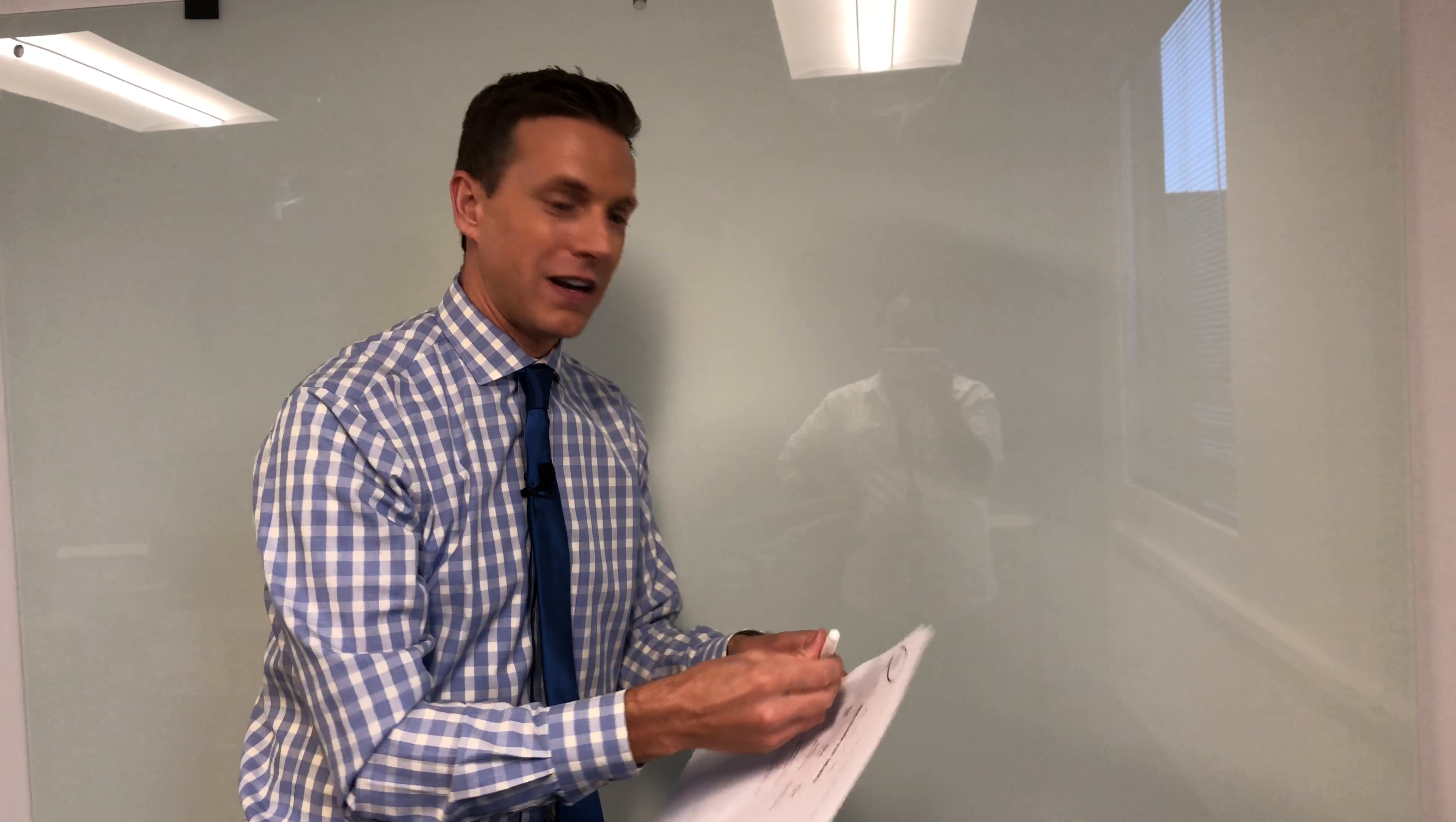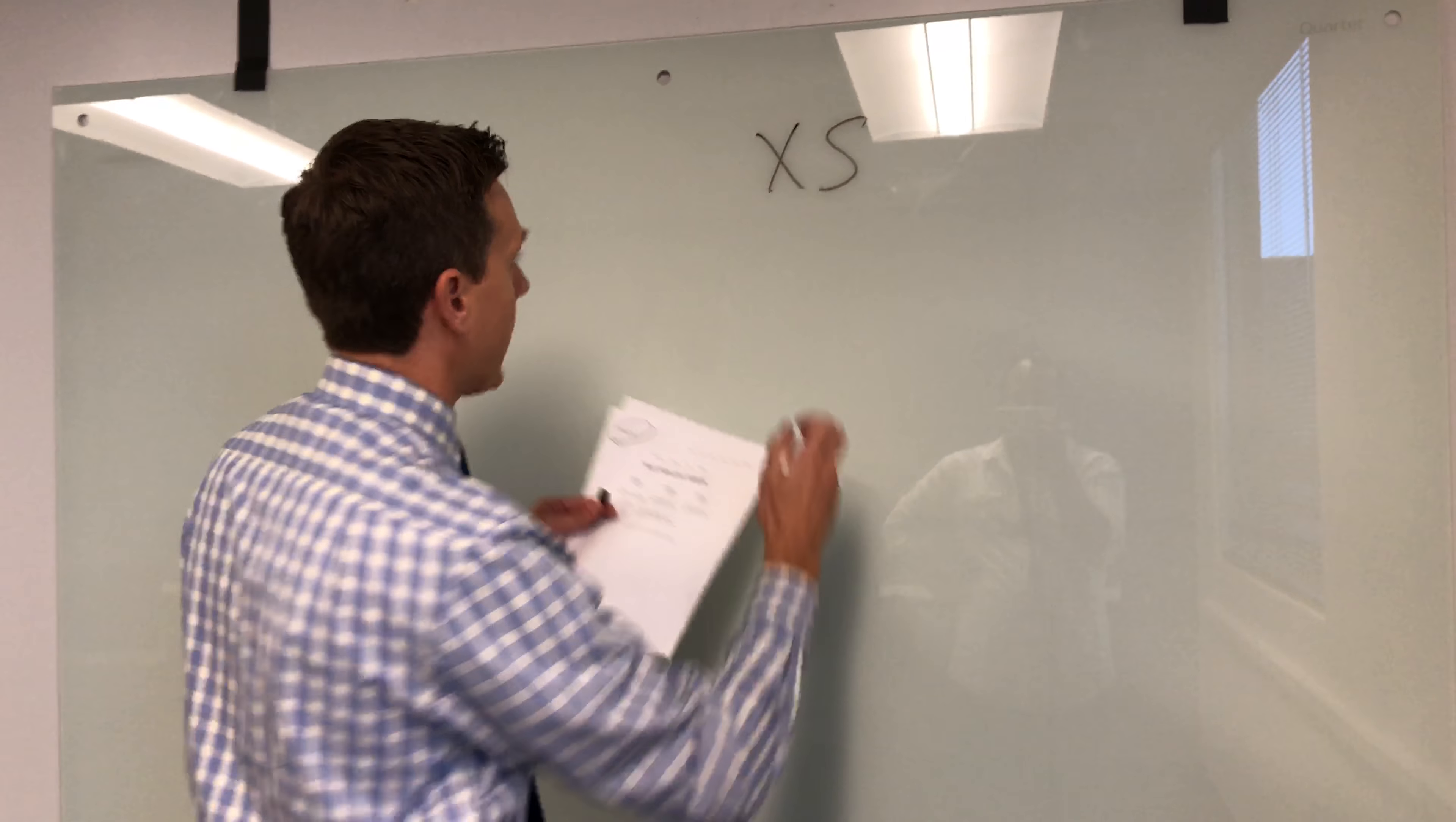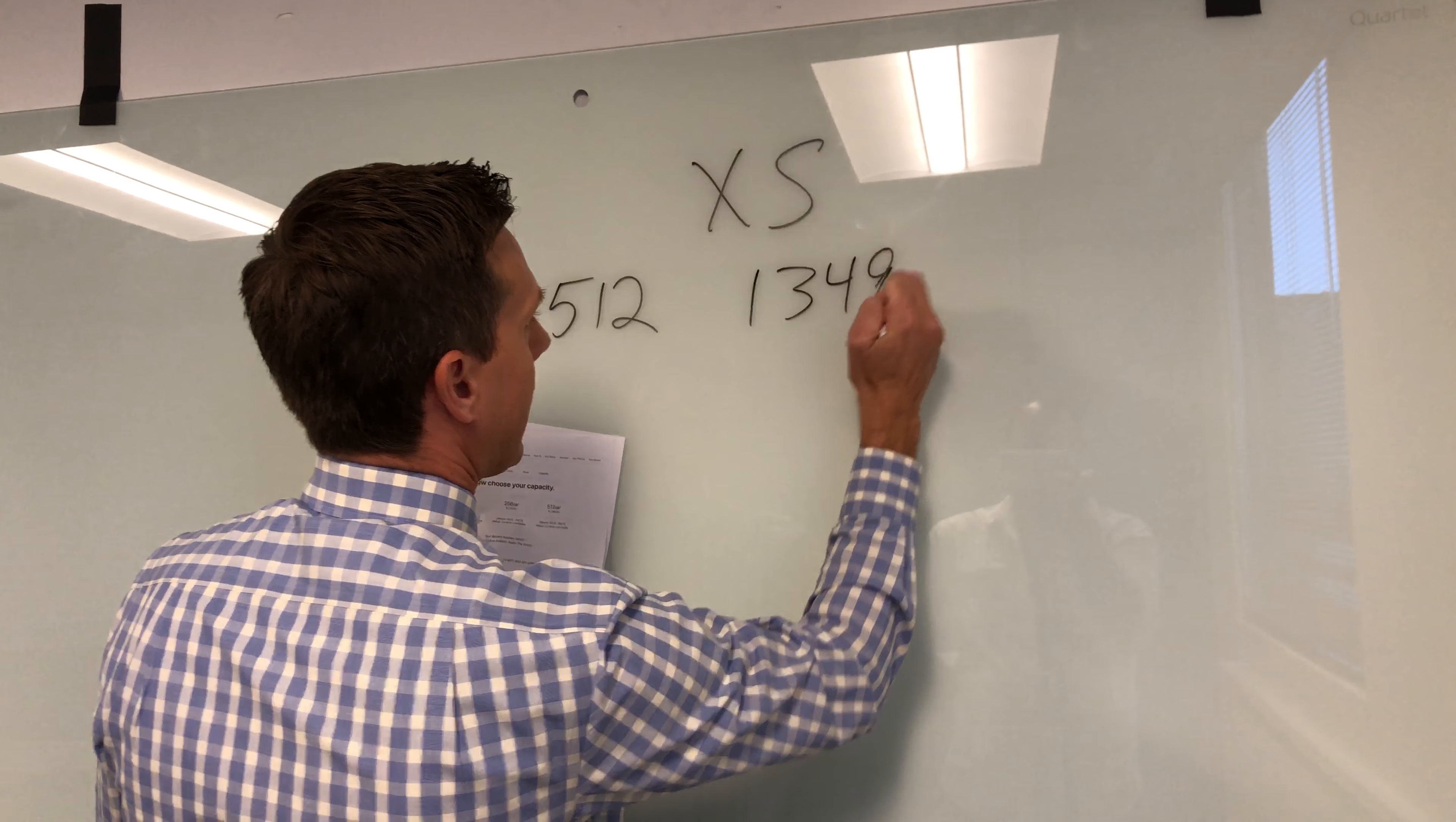So I've got the pricing here for the iPhone XS. Let's start with that. So we got the XS, right? So let's just do basic pattern math. So for 512 gigs, you pay $1,349.